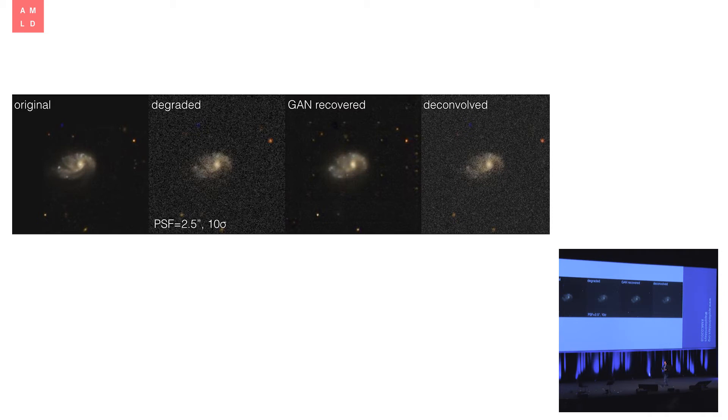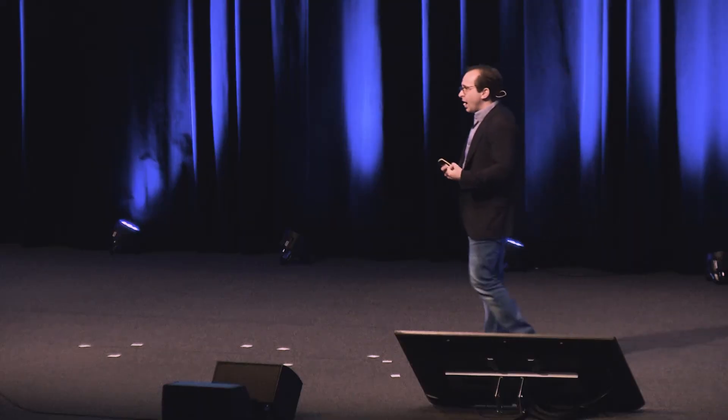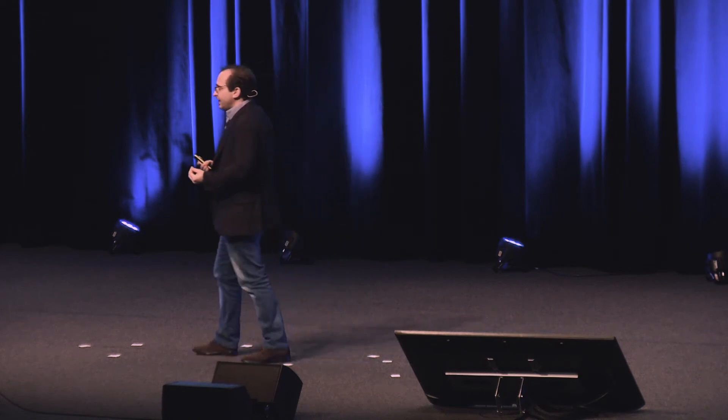The skeptics will say you have to be careful, you're just amplifying noise, some structures aren't real. That's all true. But the GAN recovered image is actually more useful for science than the original degraded one, as long as you use these images in some aggregate. That means the survey that maybe cost $100 million can now do an awful lot more science by training a GAN overnight and applying it to your images.